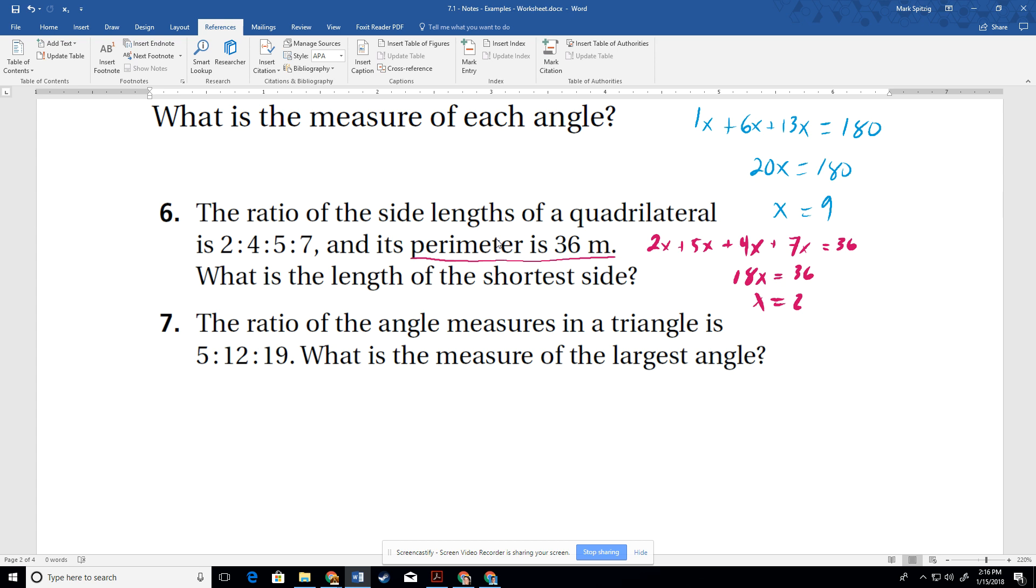And so when we get x equals 2, it says what is the shortest side? So we just plug it back into the shortest, which is going to be the two parts, the two of those x parts. So that's going to be 4. The length of the shortest side is 4.